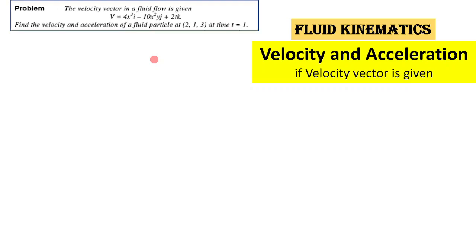In this video we are going to solve a numerical based on velocity and acceleration from fluid kinematics. The velocity vector is given by the equation 4xi minus 10x squared y j plus 2tk, and we have to find out the velocity and acceleration at the point (2, 1, 3).